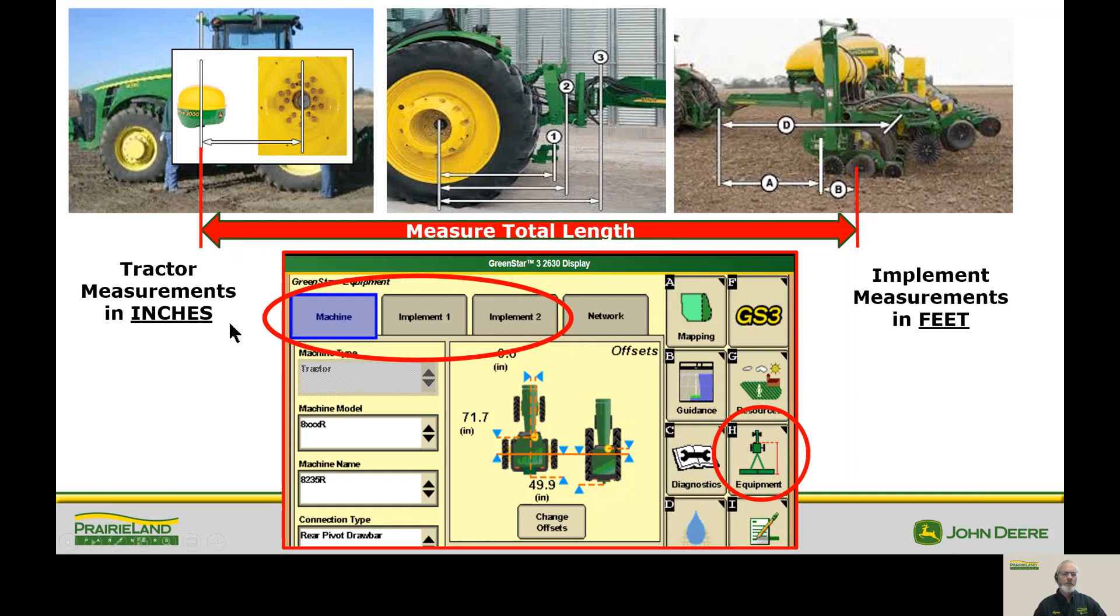This is the way it looks on your screen. You have the machine, which is a tractor, and the implement number one, which would be the planter. Oftentimes, implement number two is blank. So you're going to have your measurements here.